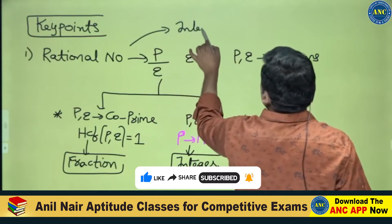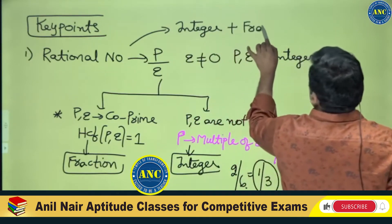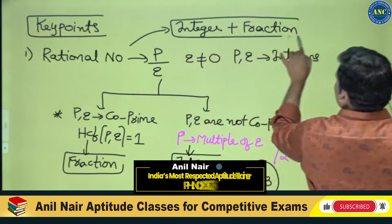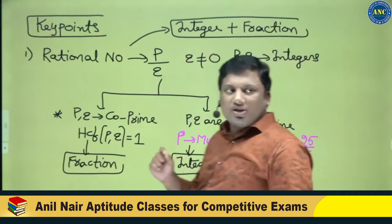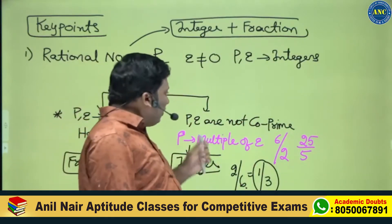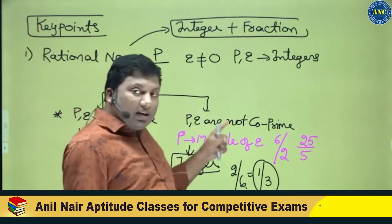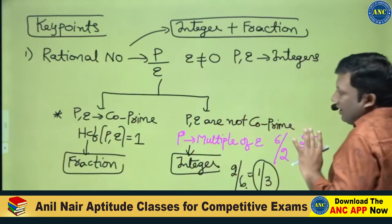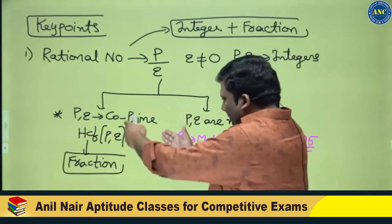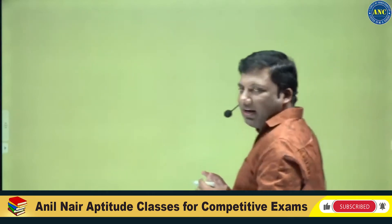A rational number is said to be a combination of two sets: one is the integer set and another is the fraction set. The fraction set arises when numerator and denominator are co-prime to each other. If numerator and denominator are not co-prime and the numerator is a multiple of the denominator, then I get an integer.